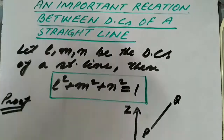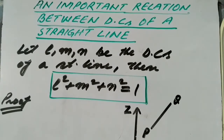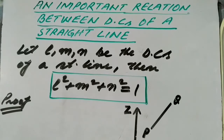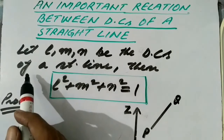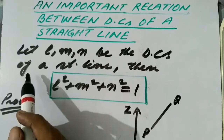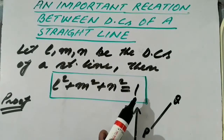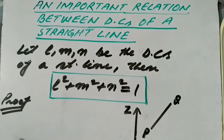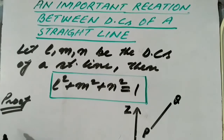Now an important relation between the direction cosines of a straight line: if L, M, N are the direction cosines of a straight line, then L² + M² + N² = 1. This is an extremely important relation which is very frequently used in the study of three-dimensional coordinate geometry.